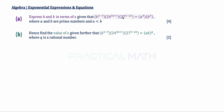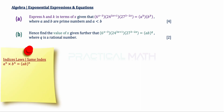Let's recap our indices laws. The first law is the same index rule: if you have the same index or power of n, then A to the power of n times B to the power of n gives us open bracket AB close bracket to the power of n. If they share the same index, the bases can simply be multiplied together inside parentheses with the power outside.